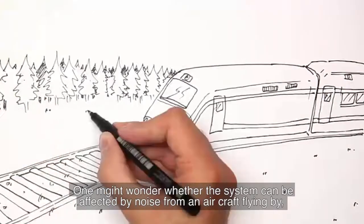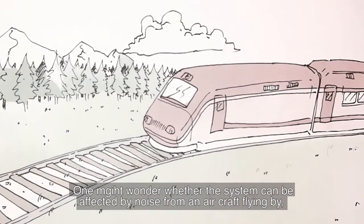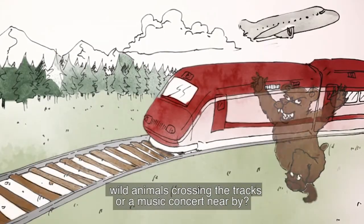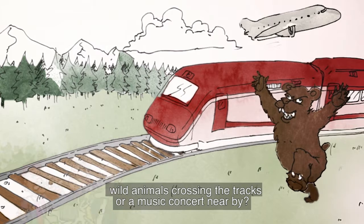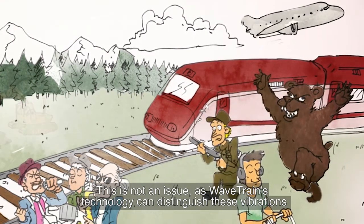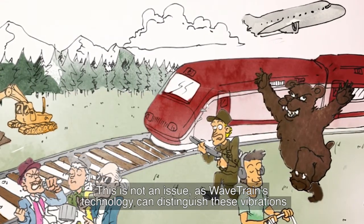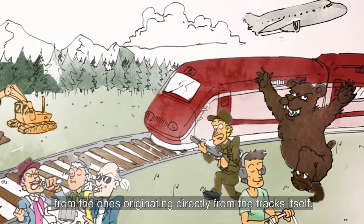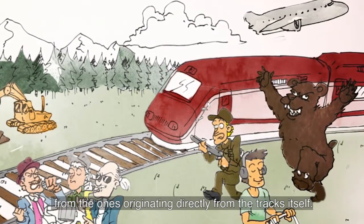One might wonder whether the system can be affected by noise from an aircraft flying by, wild animals crossing the tracks, or a music concert nearby. This is not an issue, as Wavetrain's technology can distinguish these vibrations from the ones originating directly from the tracks itself.